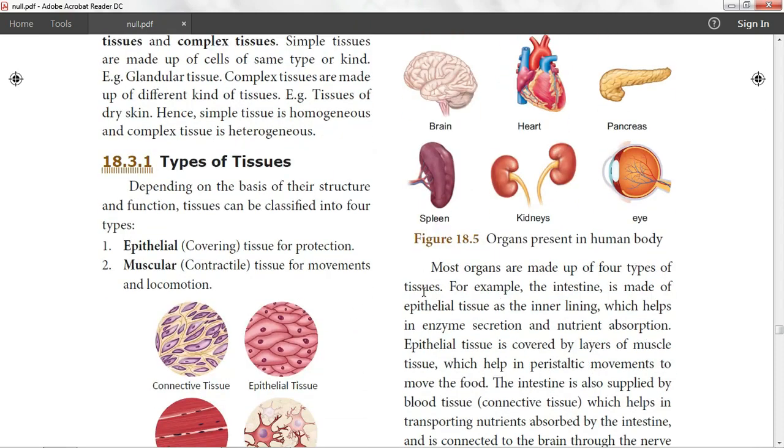Many organs are made up of four types of tissues. For example, the intestine is made up of epithelial tissue as the inner lining.